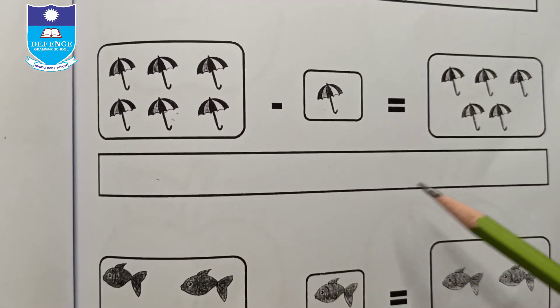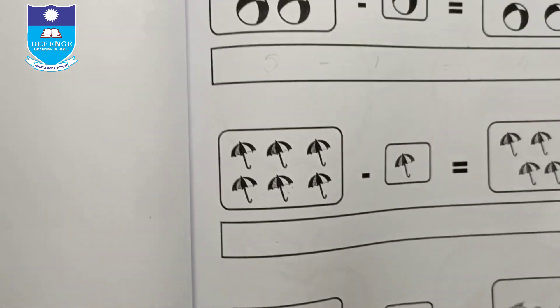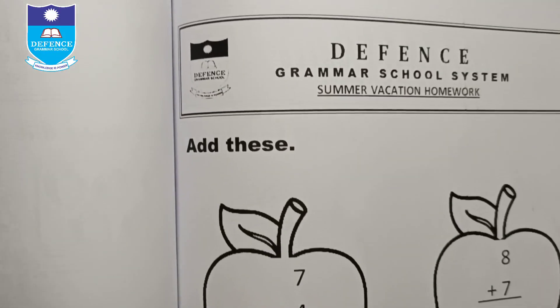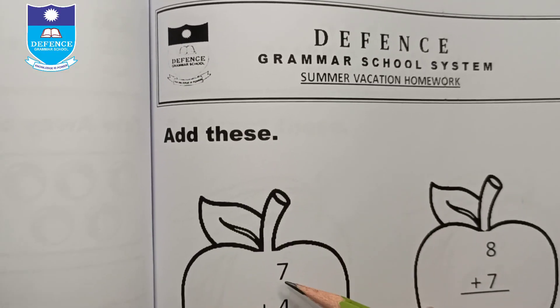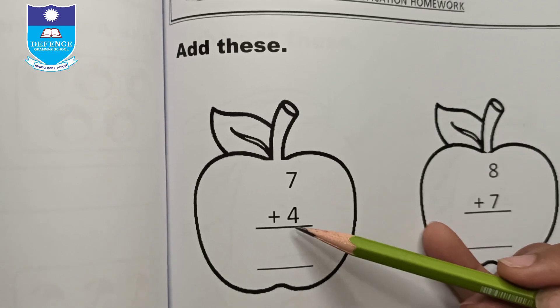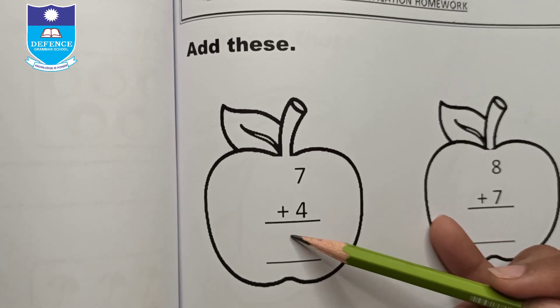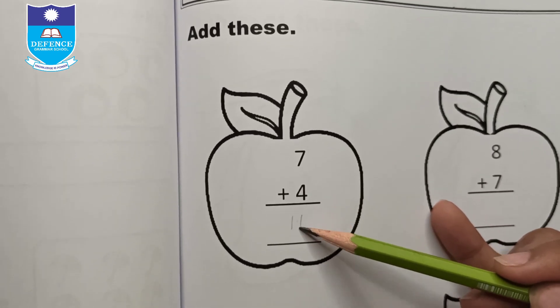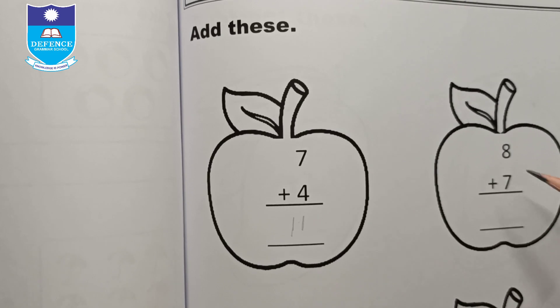Add these numbers. In the first one, 7 plus 4 equals 11 — write 11. Similarly, find the answers for 8 plus 7, 6 plus 0, and 9 plus 1.